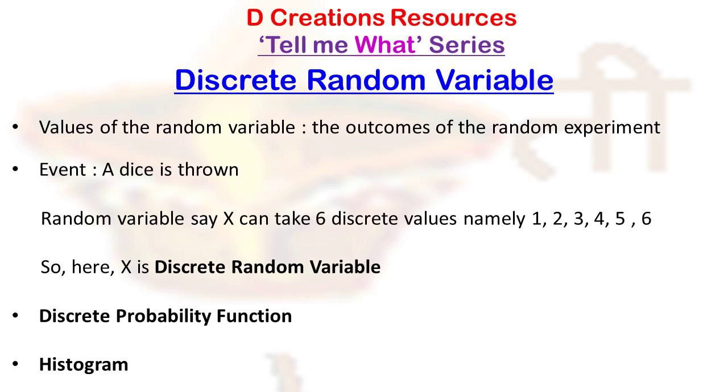So in that case, let us have a discrete random variable X, and it can take two values, namely H or T.